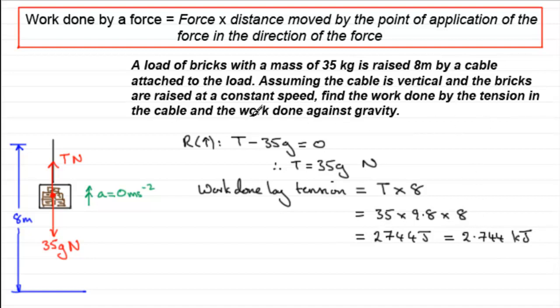Now we've got this thing here. We've got to calculate the work done against gravity. Now when we talk about the work done against gravity, we're looking at the work done by the weight here. So let's just write this down, the work done against gravity. Well, we can see that the weight, 35g, was also raised 8 meters.